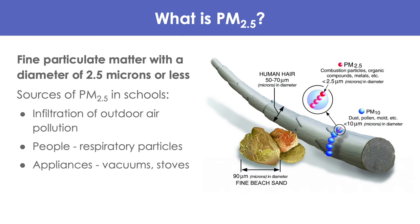PM 2.5 is fine particulate matter with a diameter of 2.5 microns or less. PM 10 is anything with a diameter of 10 microns or less, which includes PM 2.5 and PM 1. PM 2.5 is 36 times smaller in diameter than fine beach sand and 16 times smaller than human hair. Sources are mostly anthropogenic, including gasoline and diesel-powered vehicles, fibers from clothing, calcium from chalk, building deterioration, and appliances like vacuums and stoves. Schools in urban areas are more prone to higher levels of PM 2.5 from heavy surrounding traffic.